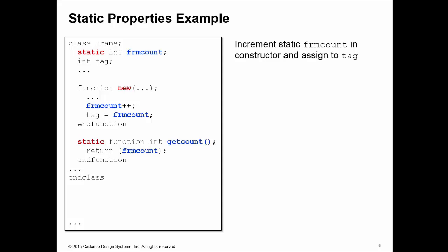So here what we do in the constructor of the frame class: I increment my frame count static property and I assign that static property frame count to the dynamic property tag. And the idea now here is that frame count counts the number of frames I've created. It's always incremented for each new constructor call. But even better, tag gives me a unique count, a unique identity for every instance of my frame.